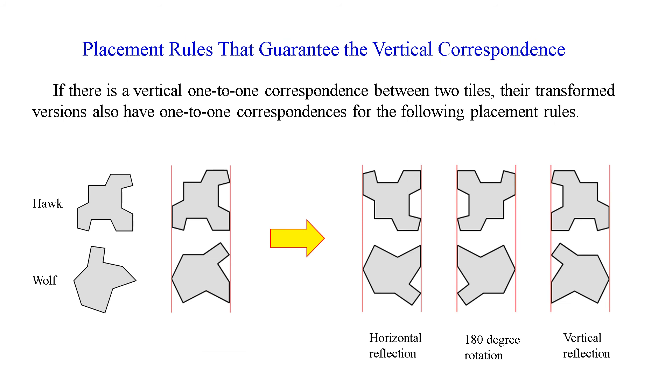So in order to make an ambiguous tiling, the two tiles should have one-to-one correspondences for all pairs of orientations that appear in the tiling. However, we are lucky because some placement rules automatically guarantee the one-to-one correspondence.